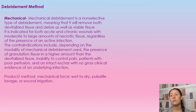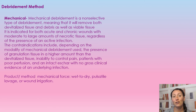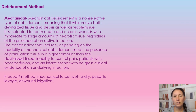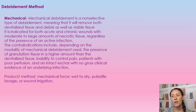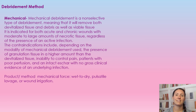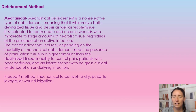Next is mechanical debridement, which is a non-selective type. It removes devitalized tissue and debris from the wound, but it also removes good viable tissue. This is the wet-to-dry method: you dampen a gauze dressing with saline, place it in the wound, let it dry, and then peel it back. Patients find this very painful, and it does pull away healthy growing tissue along with the necrotic tissue. It is not my preferred method, but it is a recognized debridement method.